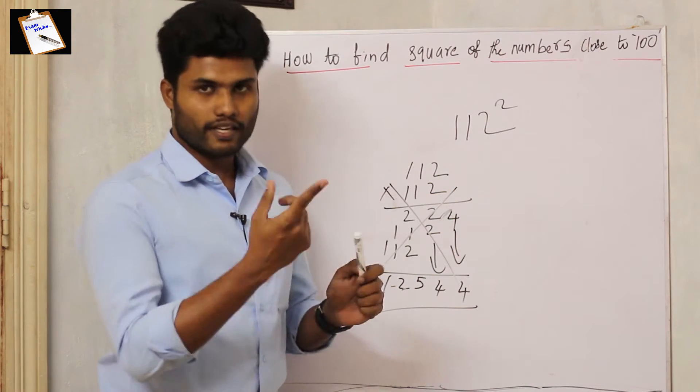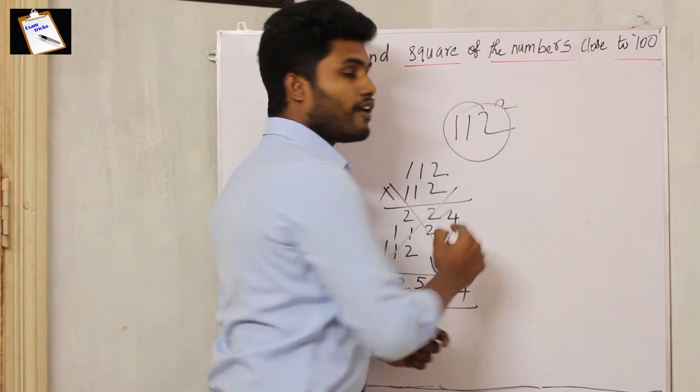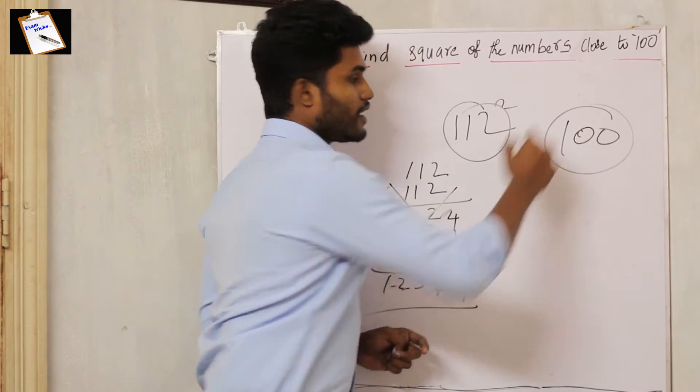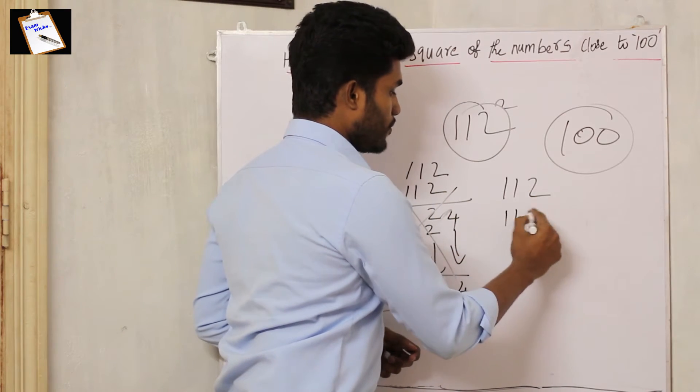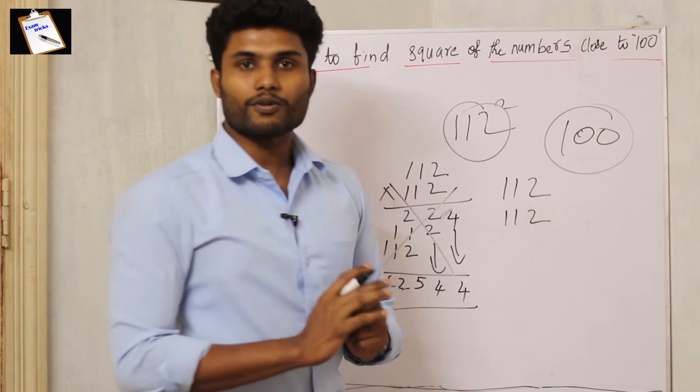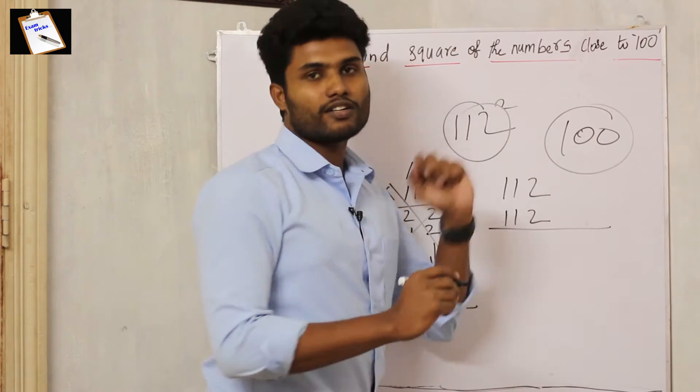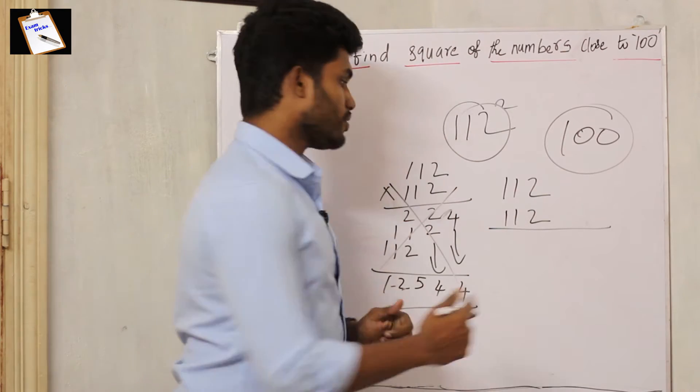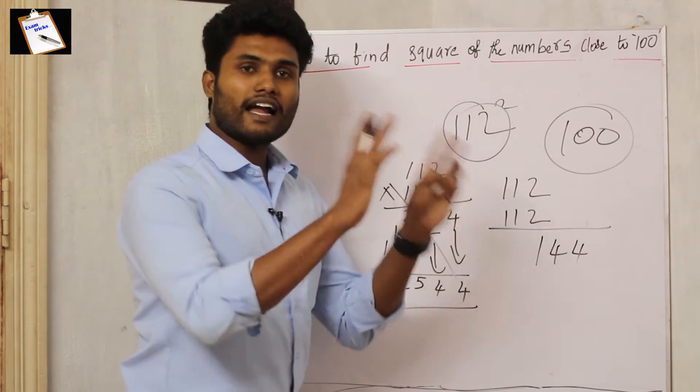I will tell you the trick. For solving this, assume 100 as a base. So for 112, what is the difference from 100? Very good, the difference is 12. Then what is 12 square? 12 square is 144.